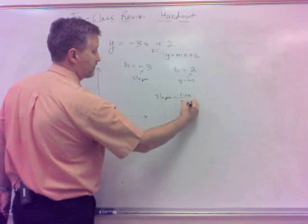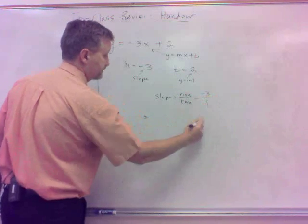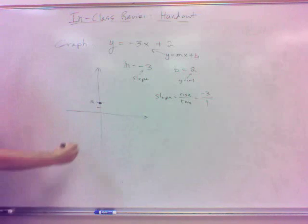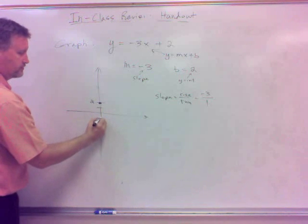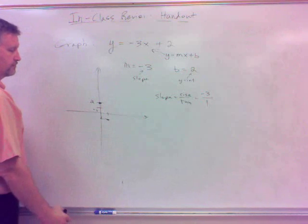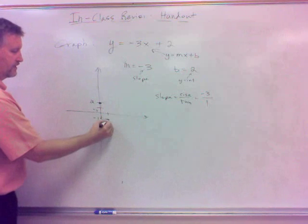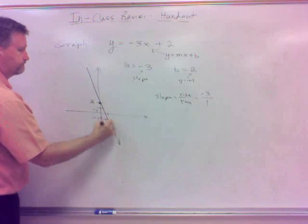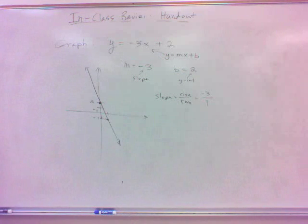Go to your y-intercept of 2. And then how would I use a slope? Well, slope is rise over run. And if it's negative 3, that's the same as negative 3 over 1, isn't it? So I've got a negative 3, rise, run 1, so that means down 3, down 3, and then over 1. Puts me right there at negative 1, negative 1. That's another point, so I can graph this thing.